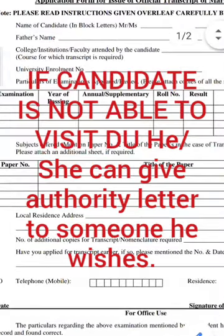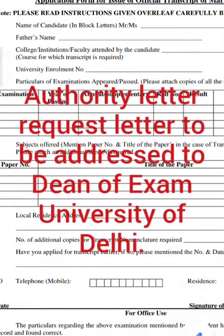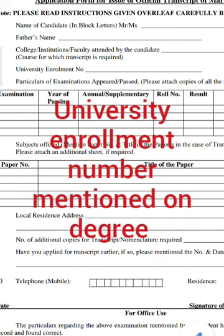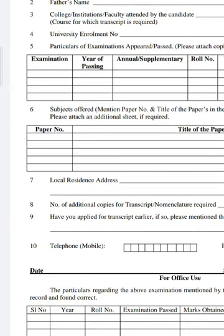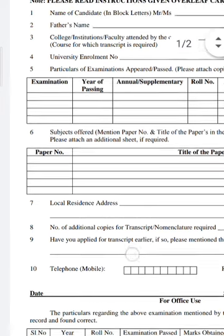Now, on the form: enter the name of the candidate in block letters, the college last attended, and the university enrollment number. This enrollment number should be procured from the concerned department or college. For example, in SOL the SOL number is different from the university enrollment number. The enrollment number must be written down — it is found on the degree.